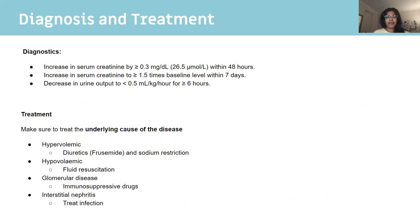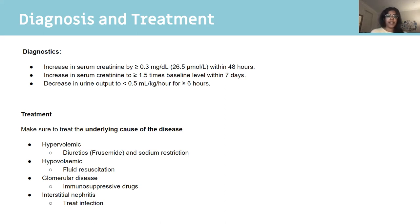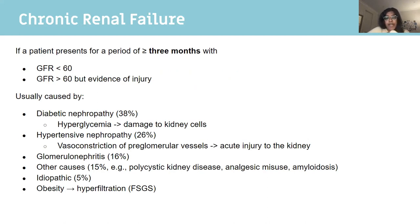For diagnostics, remember oliguria and an increase in serum creatinine. More specifically: an increase in creatinine greater than 0.3 within 48 hours, or 1.5 times above baseline within seven days, classifies as an AKI. Urine output decreasing dramatically for more than six hours also classifies as an AKI. Treatment involves figuring out and treating the underlying cause — if hypovolemic, give fluids; if related to glomerular disease, treat the infection.